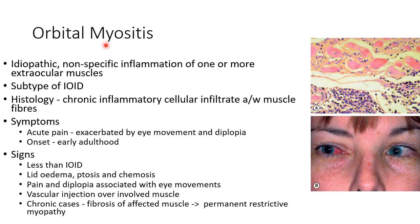Orbital myositis is idiopathic non-specific inflammation of one or more extraocular muscles; it is basically a subtype of IOID. Histopathology shows chronic inflammatory cellular infiltrate associated with muscle fibers. Symptoms include acute pain exacerbated by eye movement and diplopia. The onset of orbital myositis is typically in early adulthood.